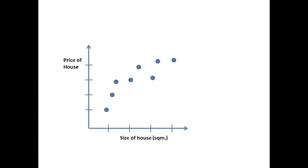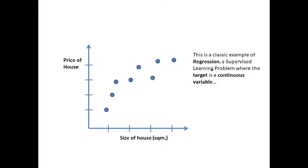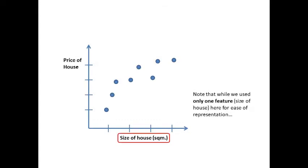Regression. This is a classic example of regression, a supervised learning where the target is a continuous variable. Note that while we used only one feature, size of the house, here for ease of representation, we shall see ML problems can have thousands of features. It will then be impossible to show it on a 2D space.